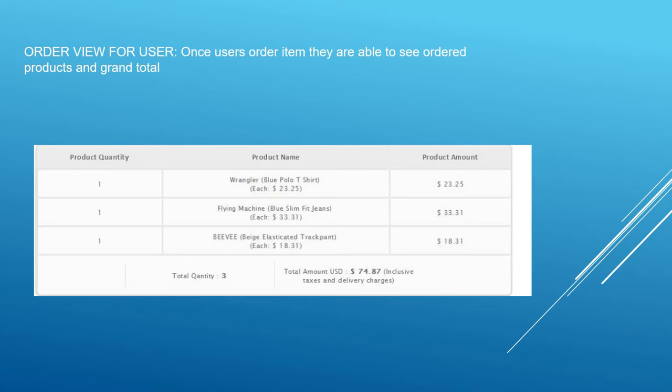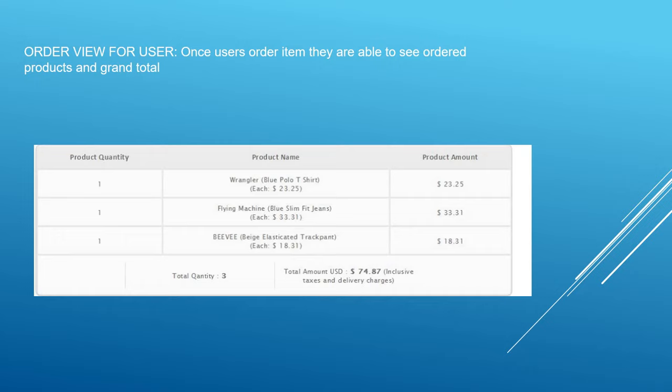Once a user orders an item, they should be able to see the ordered products with the grand total. For example: product name, product quantity, product amount, total quantity, total amount, taxes, and delivery charges — inclusive of taxes and delivery charges. These are the things that have to be shown in the order summary.